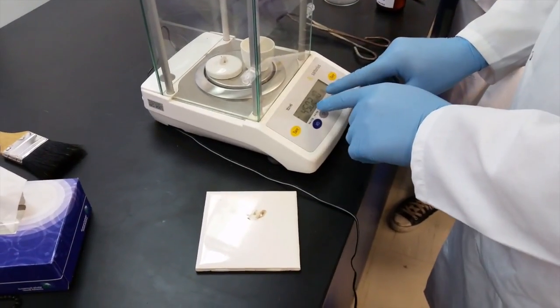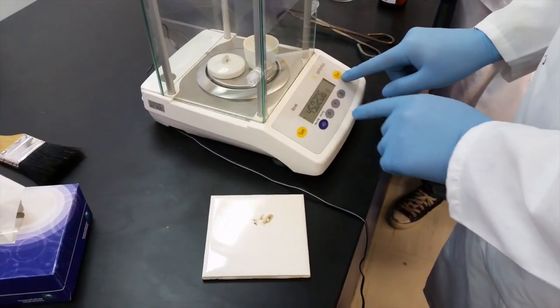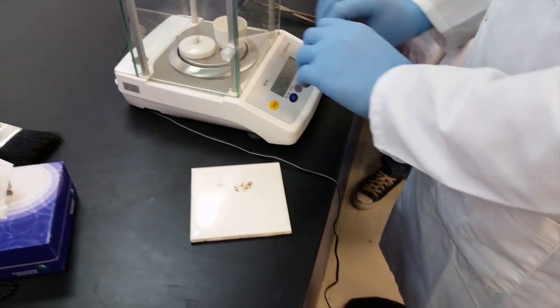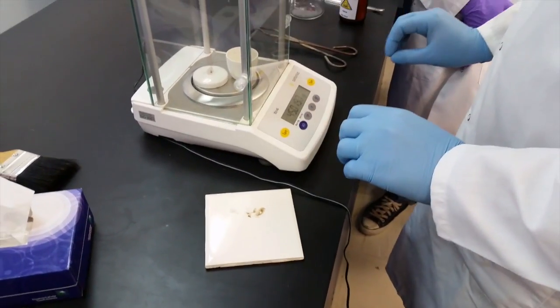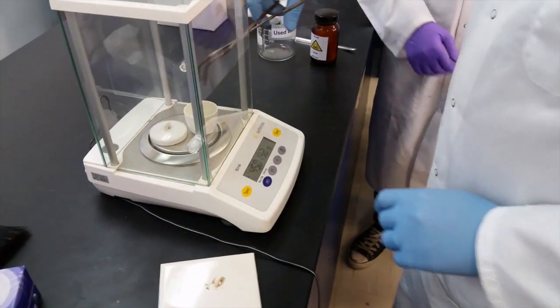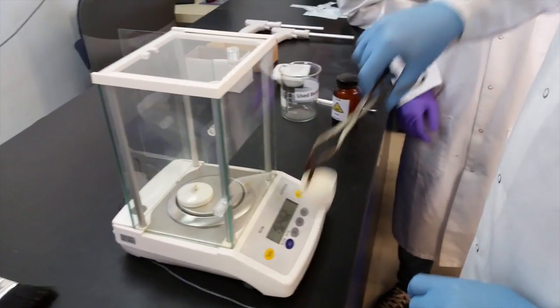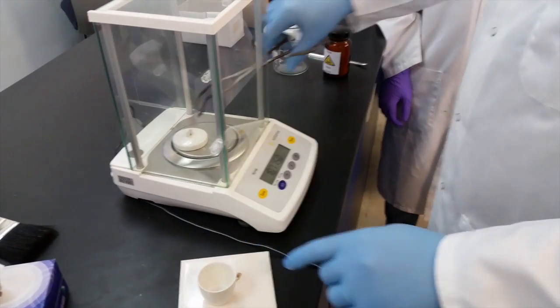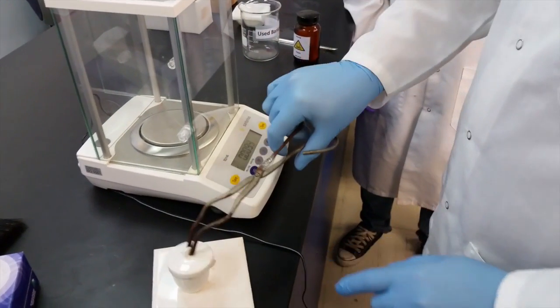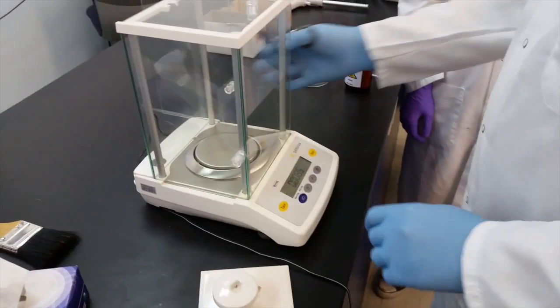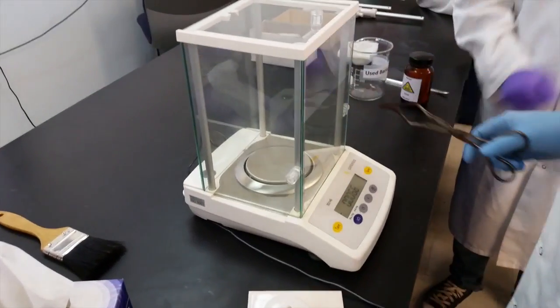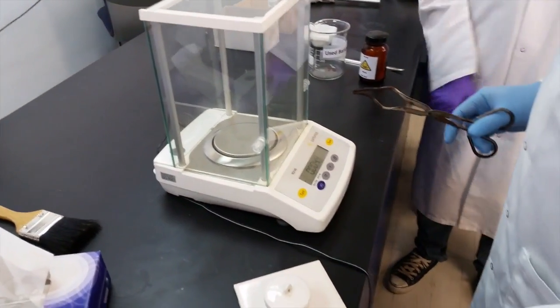If you noticed, when I added my solid I did not hit tare. You never hit tare - you only use it at the beginning. By subtracting the mass of empty crucible from the mass of crucible and salt, I can get the mass of hydrate before heating.